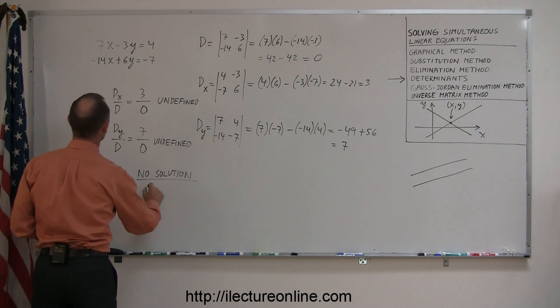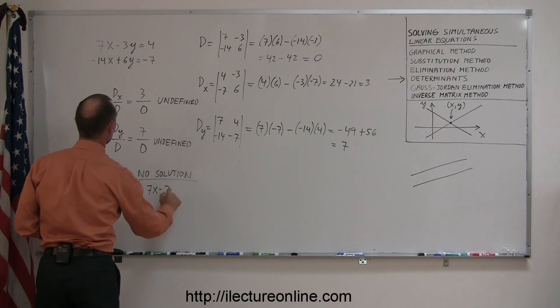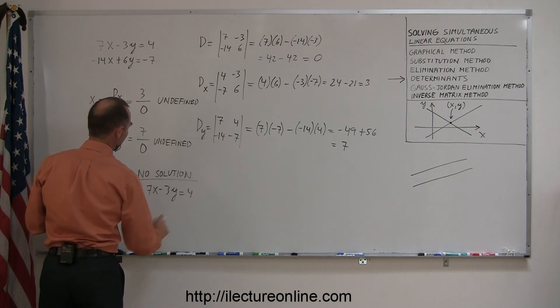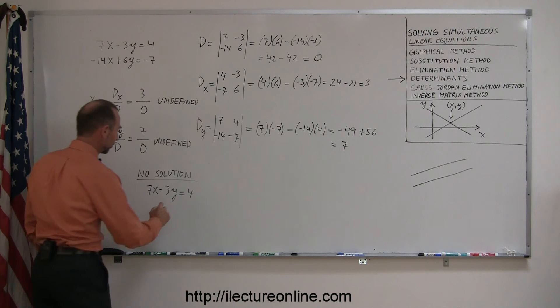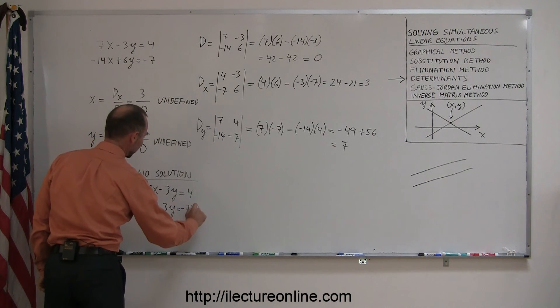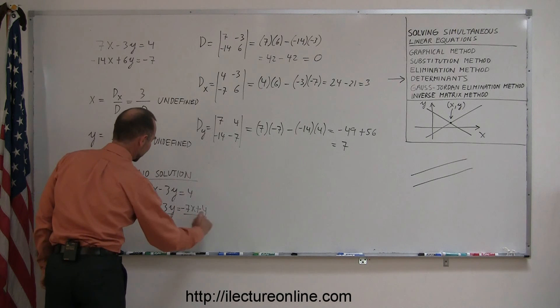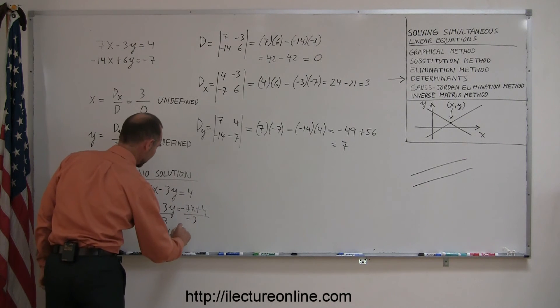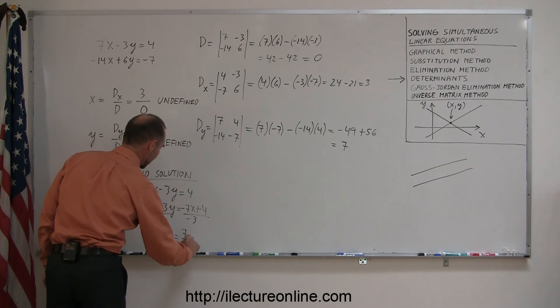Let's take our first equation, which is 7x minus 3y equals 4. We move the 7x to the other side. We get minus 3y equals minus 7x plus 4. Then we divide both sides by negative 3. So, we get y equals 7 over 3x minus 4 over 3.